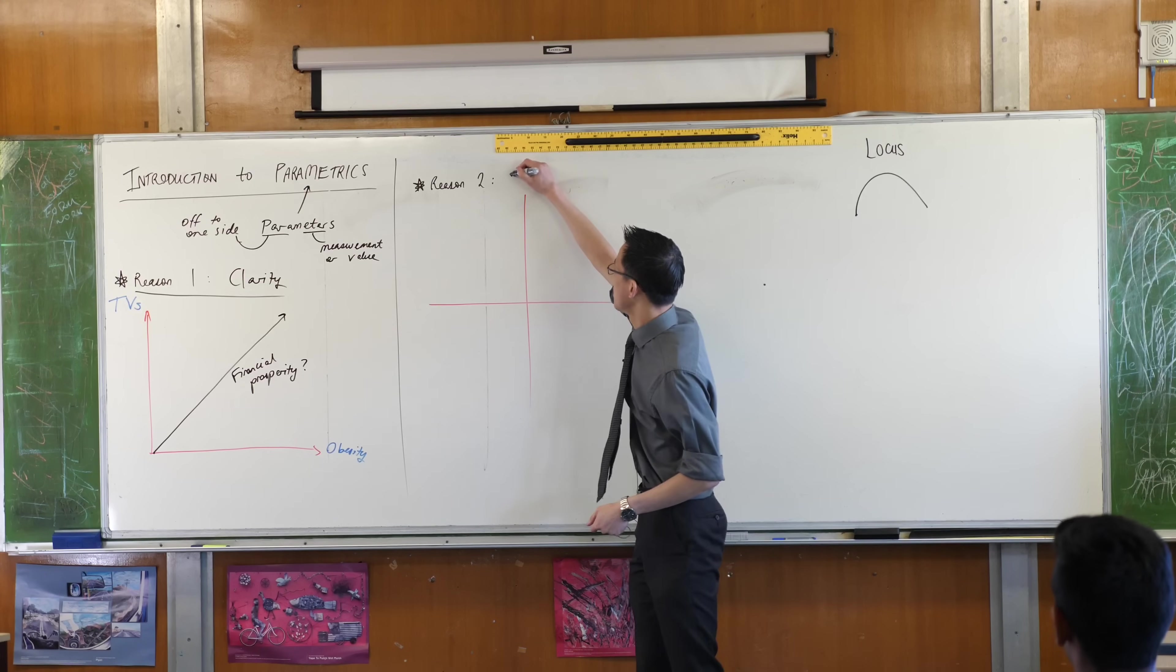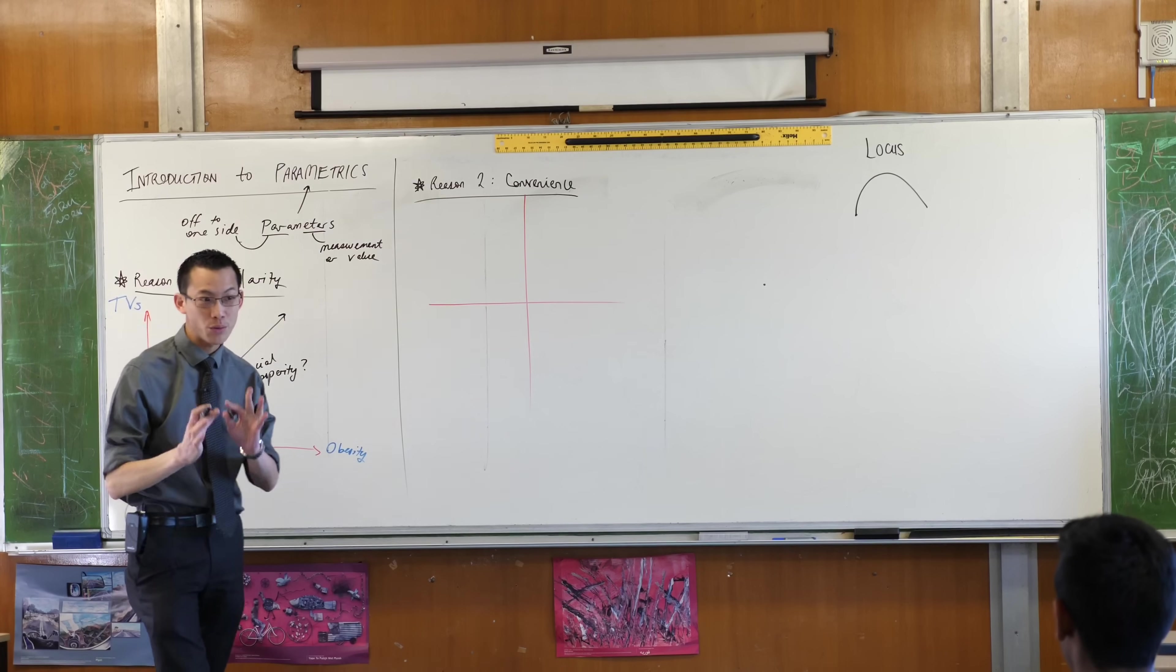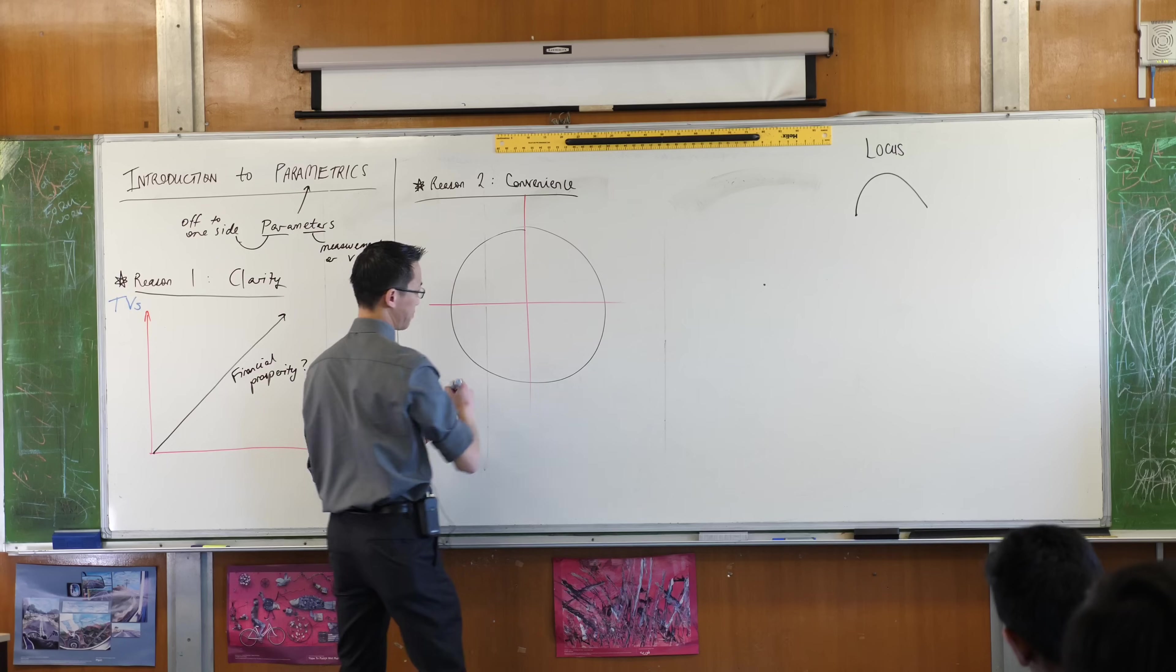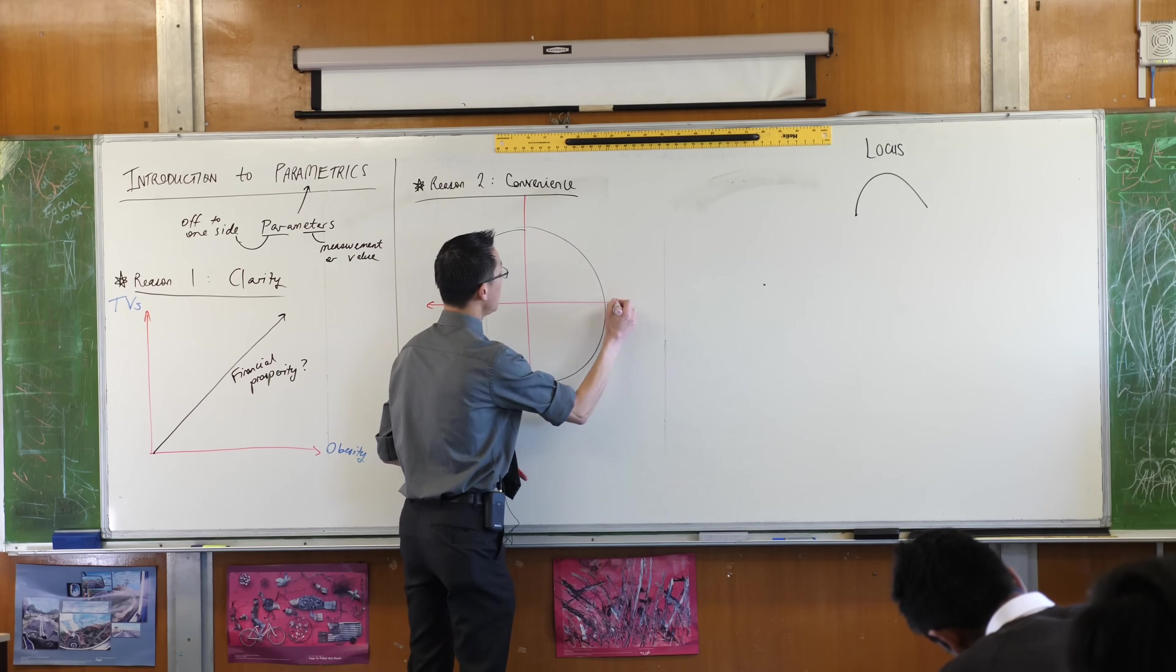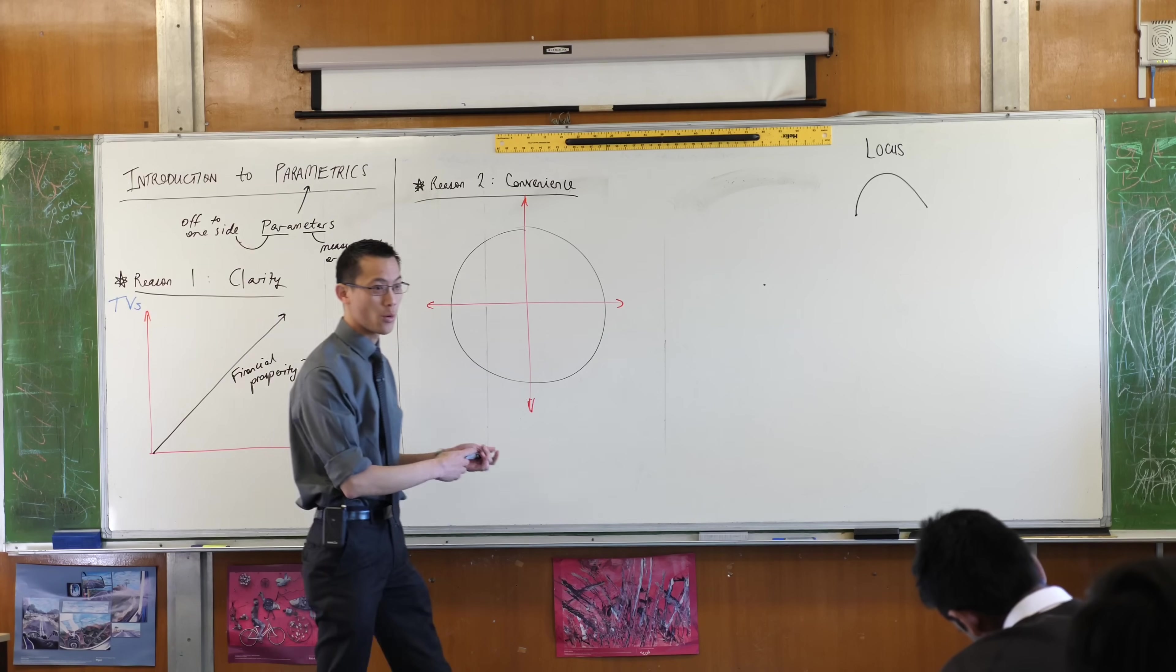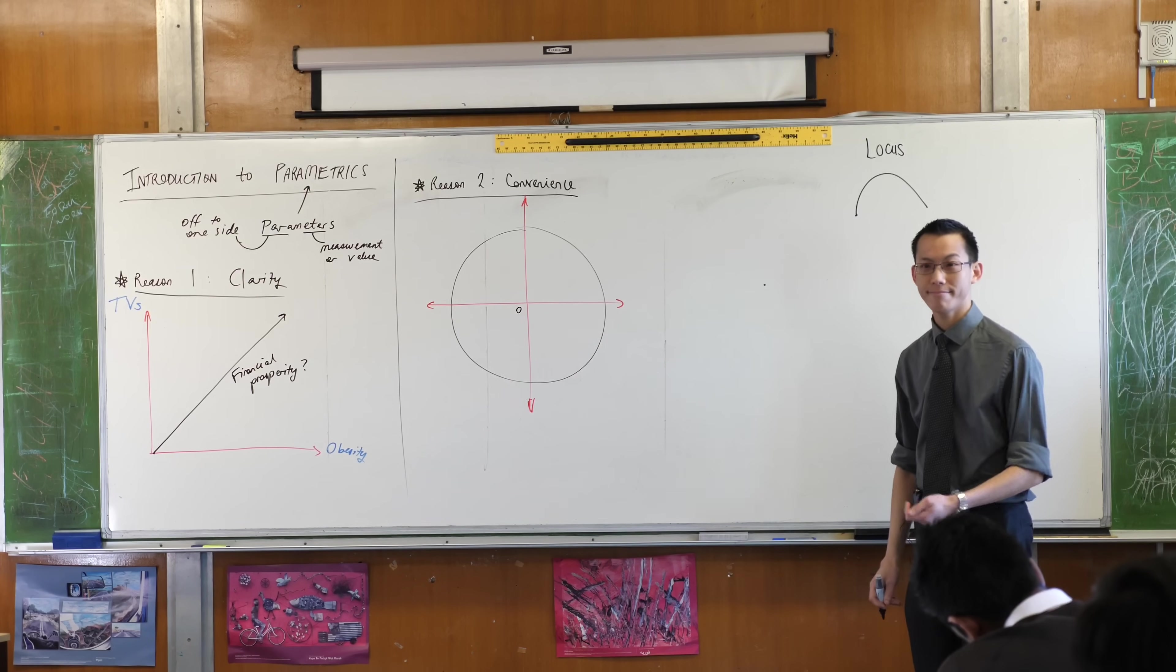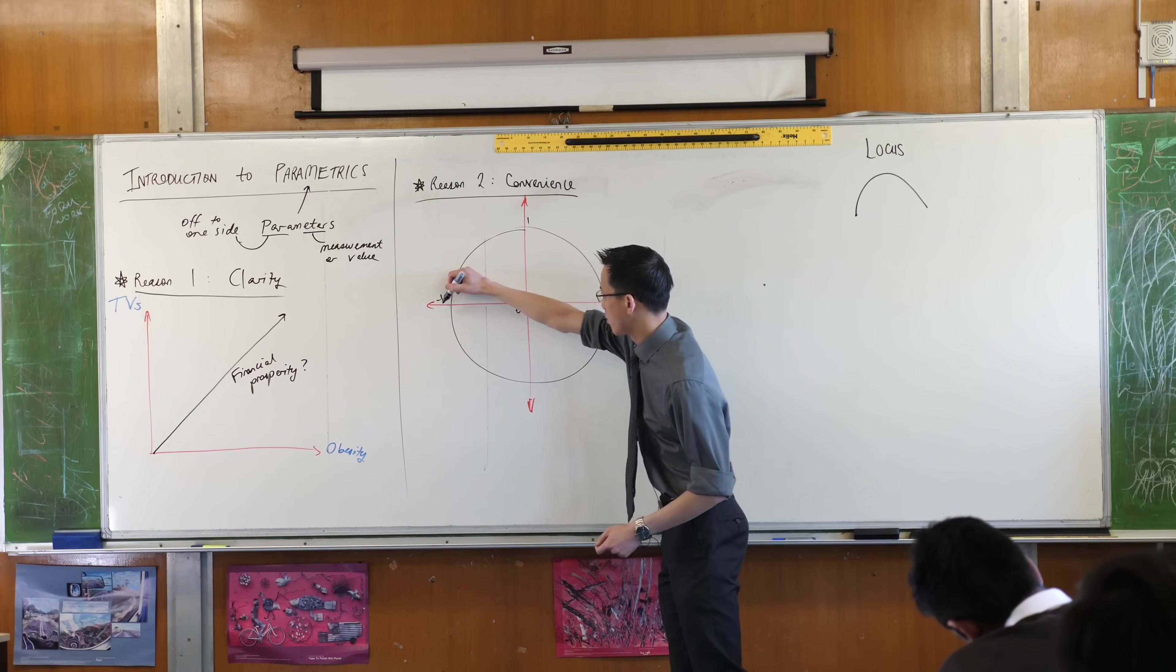There's another reason which is convenience because this idea of a parameter you actually have already encountered it we just didn't tell you that it was a parameter. On your next Cartesian plane here can you draw for me the unit circle? Now the unit circle is a very important shape we've been dealing with it for a while. It's a circle with the center at zero zero the origin and it has a radius of one hence the unit circle.